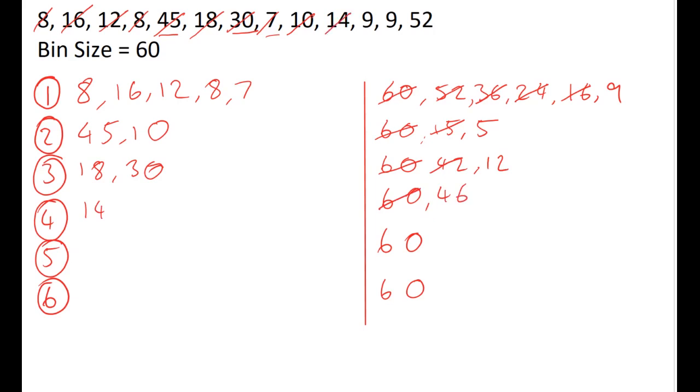After the 14, we have a 9. The 9 can fit into the first one, and that first bin is now full. So we can cross off the 9. The second 9 won't fit into the second bin, we only have a space of 5 in there, but it will fit into the third bin. That now has a space of 3.